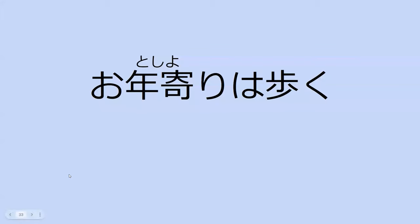So 年寄り is kind of like the word 'elder' or 'elderly' — that's the polite way to refer to old people. Saying 'old people' is kind of rude, right? Versus saying 'elderly.' So 年寄り is the polite term.